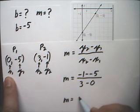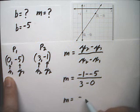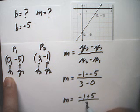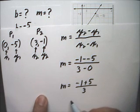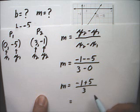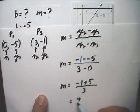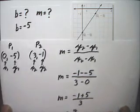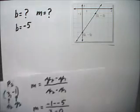Now minus a minus 5 is the same thing as plus 5. So, we have minus 1, plus 5 in the top. And 3 minus 0 is 3. So, our slope works out to 4 thirds. So, the slope is 4 thirds.